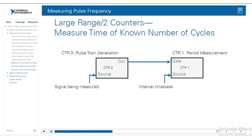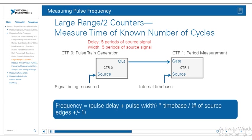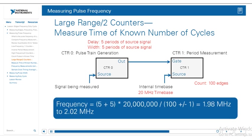Counter 1 is automatically allocated and you don't have to configure it. For example, suppose we program counter 0 for pulse train generation with pulse specs of 5 and 5 — meaning the delay and width are each 5 periods of the source signal, so the period of the resulting pulse train consists of 10 periods of the source signal. If counter 1 is configured for period measurement using the internal 20 MHz time base as its source, and counter 1 registers 100 source edges during one gate period, we can deduce the gate period lasted 5 microseconds — that's 50 nanoseconds times 100 edges. Backtracking, the external signal wired to counter 0's source had a period of 0.5 microseconds, or a frequency of 2 MHz.